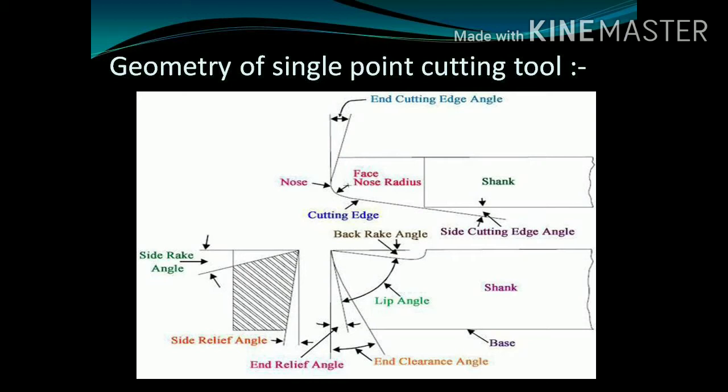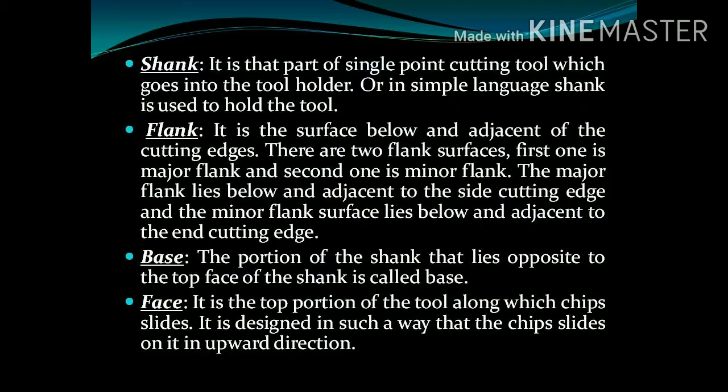As you see in the video, the figure shows a diagram of a single point cutting tool. It has various angles and we are going to define these angles in further video. Let's start with shank. It is the body of the tool and it is used to hold the tool. We can define this as the part of tool which goes into the tool holder. Moving on to next, that is flank. It is the surface below and adjacent to the cutting edge. There are two flank surfaces: major flank and minor flank.